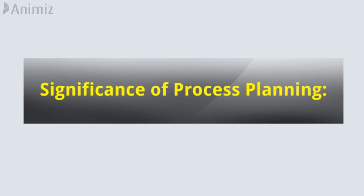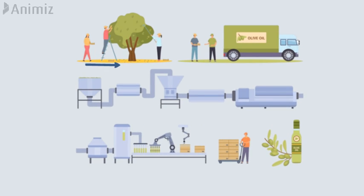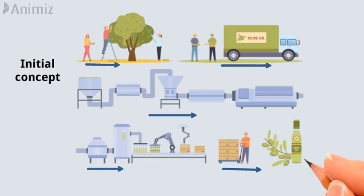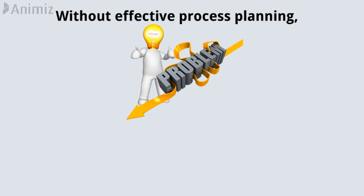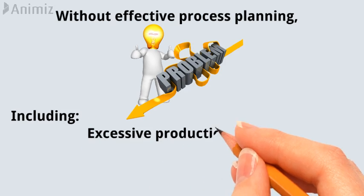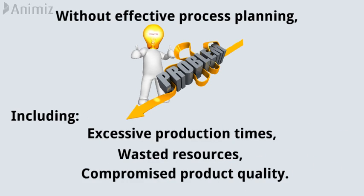Significance of Process Planning. Process planning acts as the bridge between product design and actual production. It's a blueprint that guides manufacturers through each phase of production, from the initial concept to the final assembly. Without effective process planning, manufacturers might face a range of challenges, including excessive production times, wasted resources, and even compromised product quality.